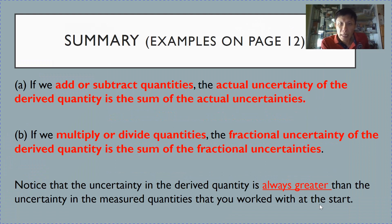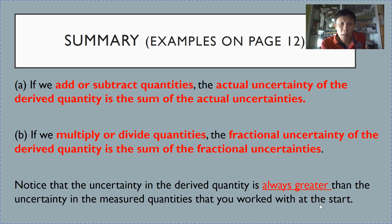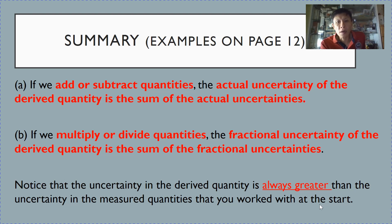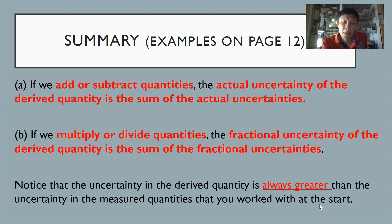Hello everyone, this will be the last video for this topic. We will look at the examples on page 12. Before going to the examples, let us do a brief recap: for expressions involving addition and subtraction, the uncertainty is given by the summation of the actual uncertainties. For multiplication and division, the fractional uncertainty of the derived quantity is the summation of the fractional uncertainties. The final uncertainty in the derived quantity is always greater than the uncertainty you start with.